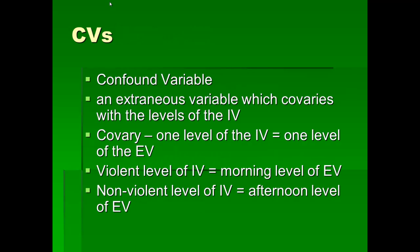So we talked about extraneous variables. Now let's move on to confound variables. A confound variable is an extraneous variable which co-varies with the levels of the independent variable. By co-vary, I mean one level of the independent variable is always associated with one level of the extraneous variable. In our example, the violent level of the IV — violent cartoons — always occurs in the morning, and the nonviolent level always occurs in the afternoon, so nonviolent is confounded with afternoon.